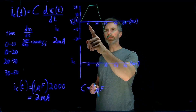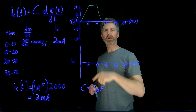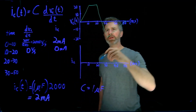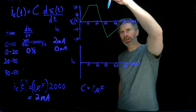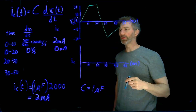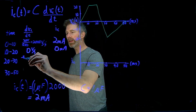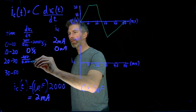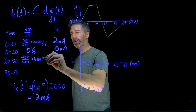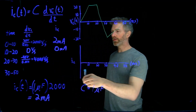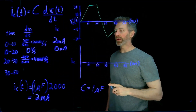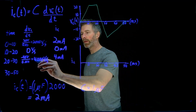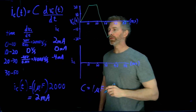From 10 to 20 milliseconds, the voltage is constant, so the rate of change is 0, which means the current is also 0. From 20 to 30 milliseconds, the voltage goes from 20 volts down to minus 20 volts — a change of minus 40 volts in 0.01 seconds, which is negative 4000 volts per second. Plugging that into the equation gives us negative 4 milliamps.